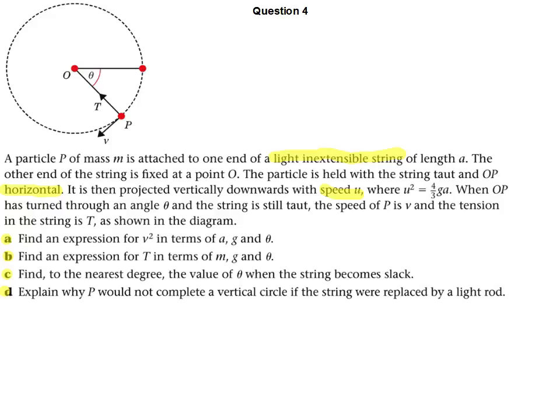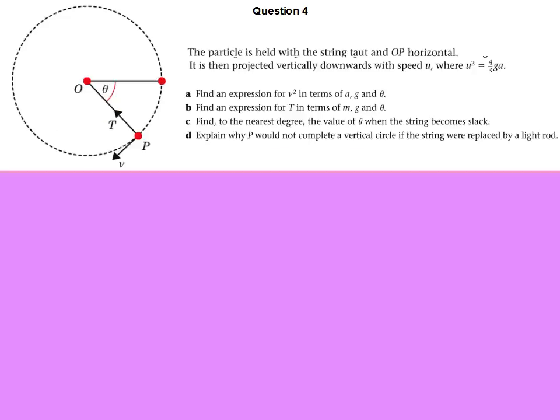And the first thing that should be coming to mind when you're moving in a vertical circle is that you're going to need to think about the energy in the situation. If we're going to work out the velocity of this particle when it's moved from a certain angle, we know that we're going to be relating kinetic and gravitational potential energy. Let's have a look at what happens when we do that.